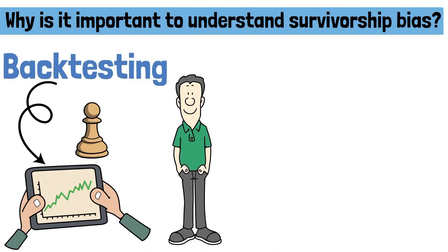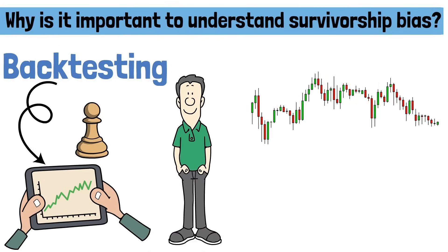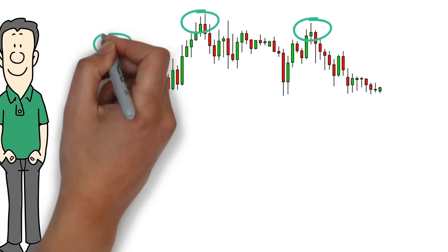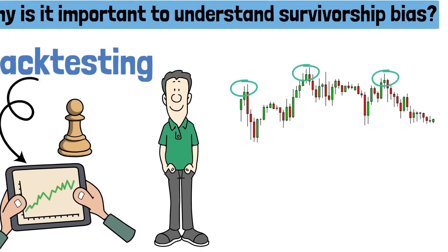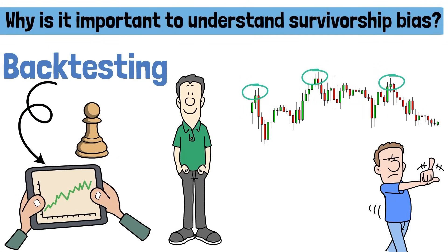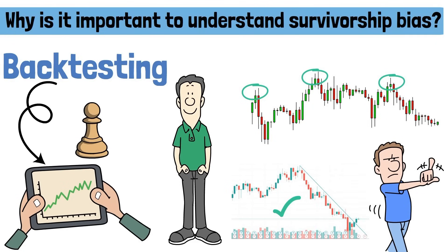Consider a scenario where you backtest numerous trading indicators. The test identifies a few indicators with impressive results, but these results might not be a true reflection of their overall effectiveness. The backtest might have overlooked numerous failed indicators in stocks, presenting an incomplete picture. You only know those who fail in hindsight.